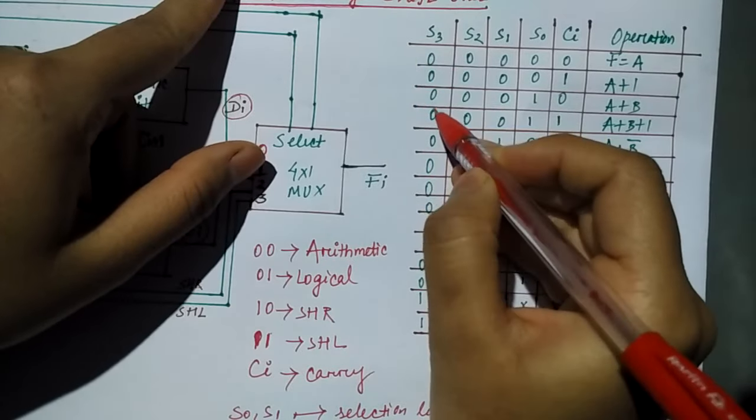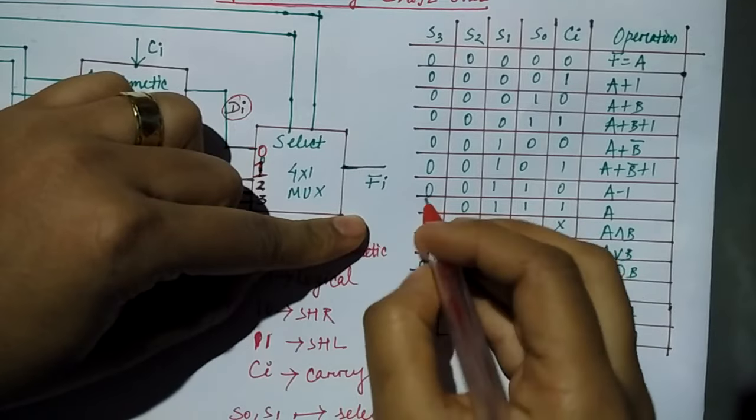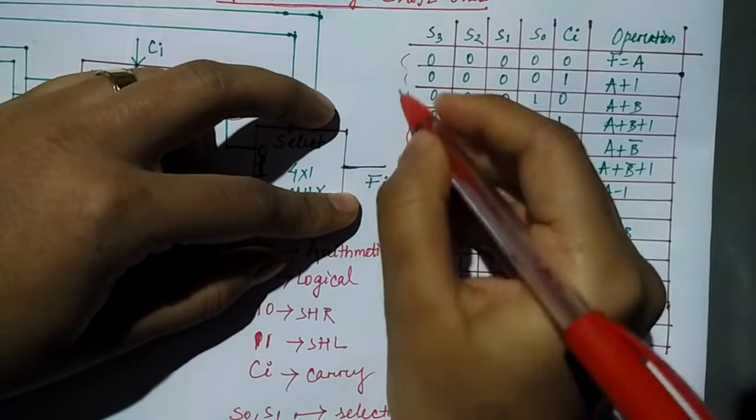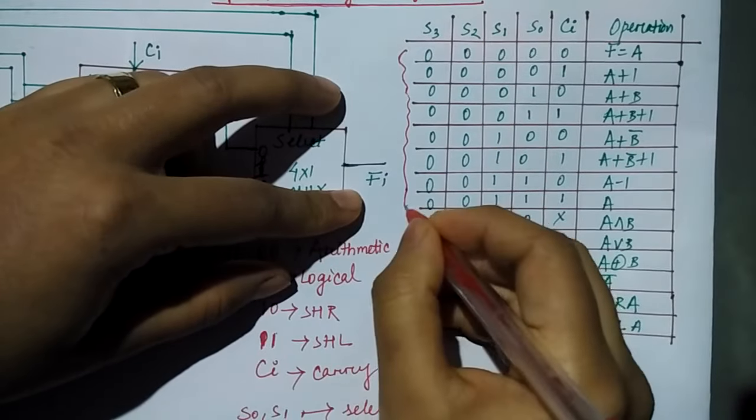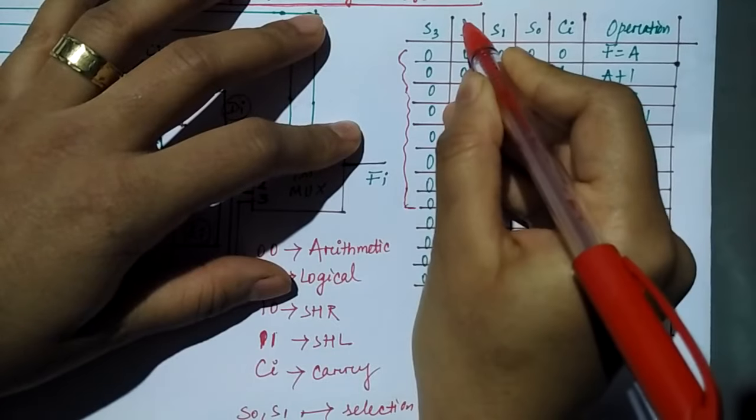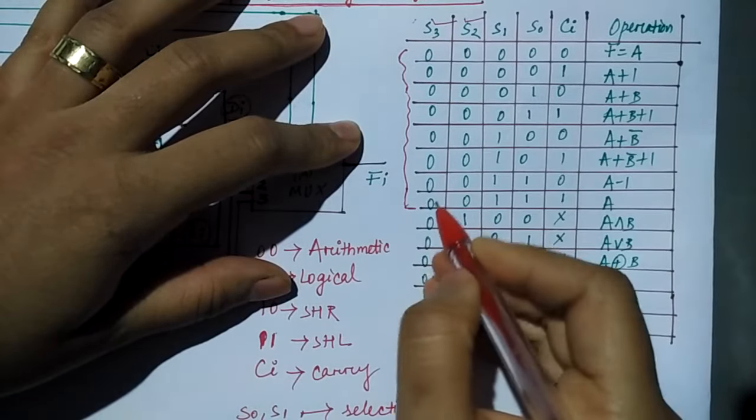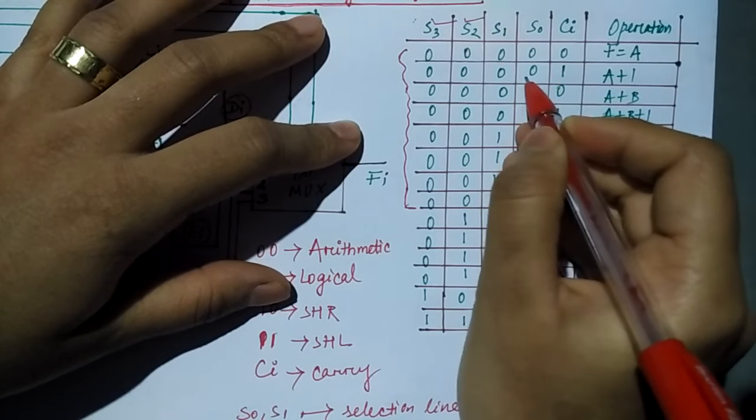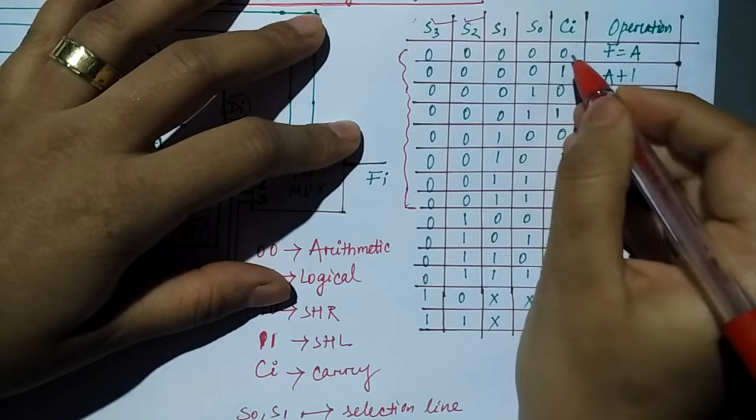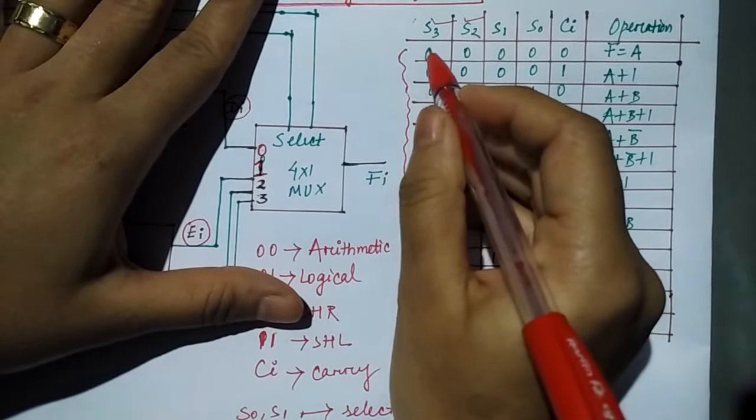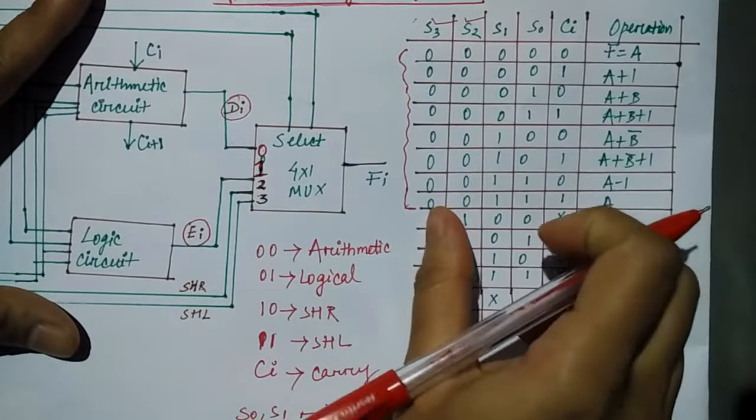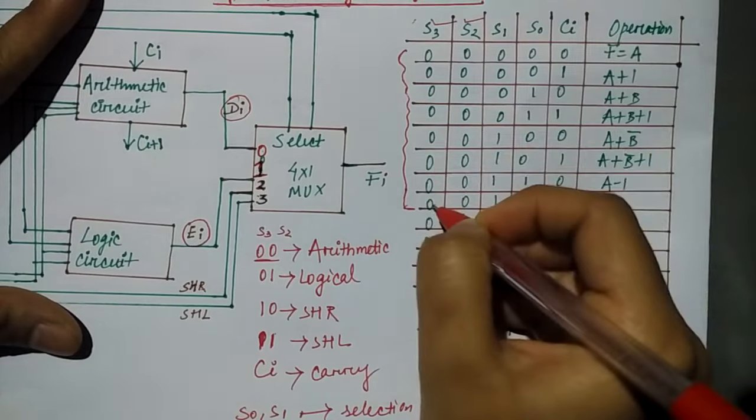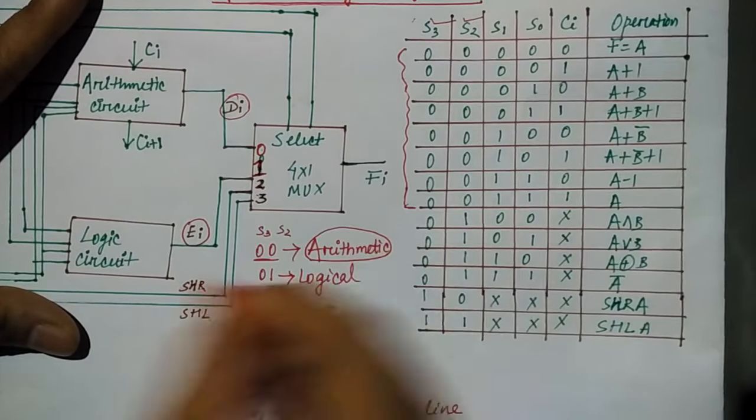If you mark here 1,2,3,4,5,6,7,8, you can see that S2 and S3 both are 0 up to 8 values. S1, S0 and CI values go from 0,0,0 to 1,1,1. These three values are 0 to 7, total 8 values where S2 and S3 are completely 0. So wherever S3 and S2 is completely 0,0 for all these 8 values, it is used for performing arithmetic operation.